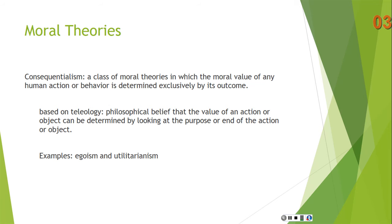Consequentialism is based on the notion of teleology — the philosophical belief that the value of an action or object can be determined by looking at its purpose or end, the end being the outcome. So the purpose of stealing the candy bar was to receive pleasure from the action and the subsequent eating of it. The end is in view when determining the rightness or wrongness of an action. Examples of consequentialist theories are egoism and utilitarianism.